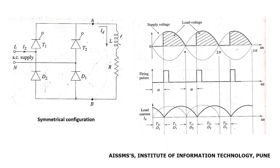Semi-controlled converters are also called half-controlled converters. This is the circuit diagram of a semi-controlled converter, which consists of a bridge rectifier with four power electronic devices used to convert input AC supply into DC output. Out of these four devices, two are controllable switches (thyristors) and two are uncontrollable devices (diodes), which is why it is called a semi-controlled or half-controlled rectifier.